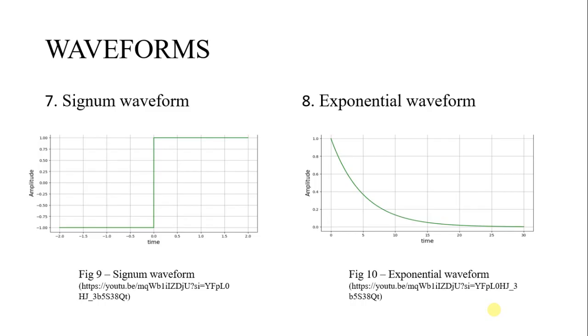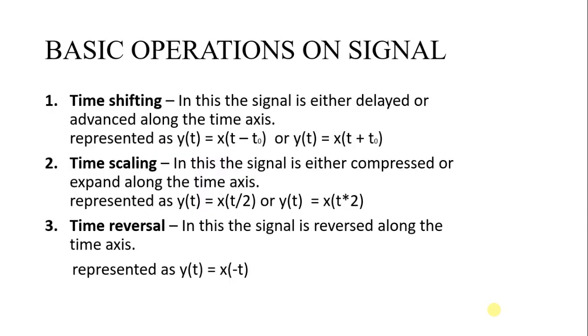Here are some basic operations on signals. First, time shifting: in this, the signal is either delayed or advanced along the time axis, represented as y(t) = x(t - t₀) or y(t) = x(t + t₀). Second is time scaling: in this, the signal is either compressed or expanded along the time axis, represented as y(t) = x(t/2) or y(t) = x(t*2). In time reversal, the signal is reversed along the time axis, represented as y(t) = x(-t).